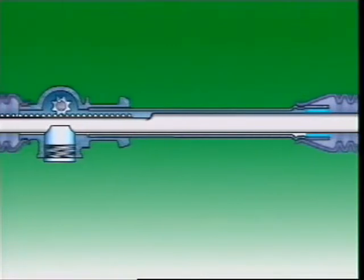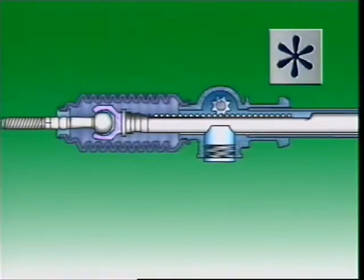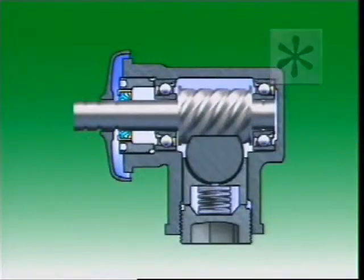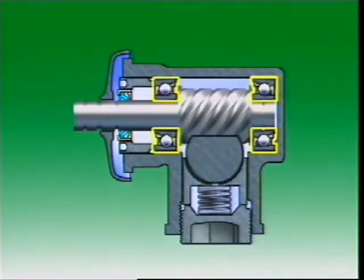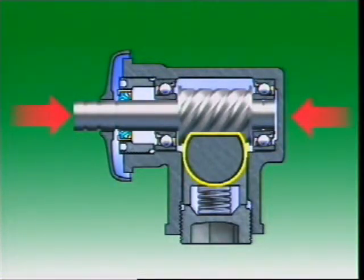Nylon is used because it has a low coefficient of friction and low wear rates. The pinion is supported by two bearings in the rack housing. These bearings are pre-loaded to keep the pinion in the correct position relative to the rack and to eliminate free play.